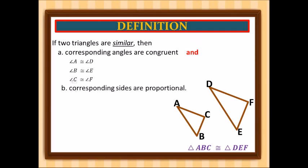So we have AB over DE proportional to BC over EF proportional to AC over DF. Now let's solve the following.